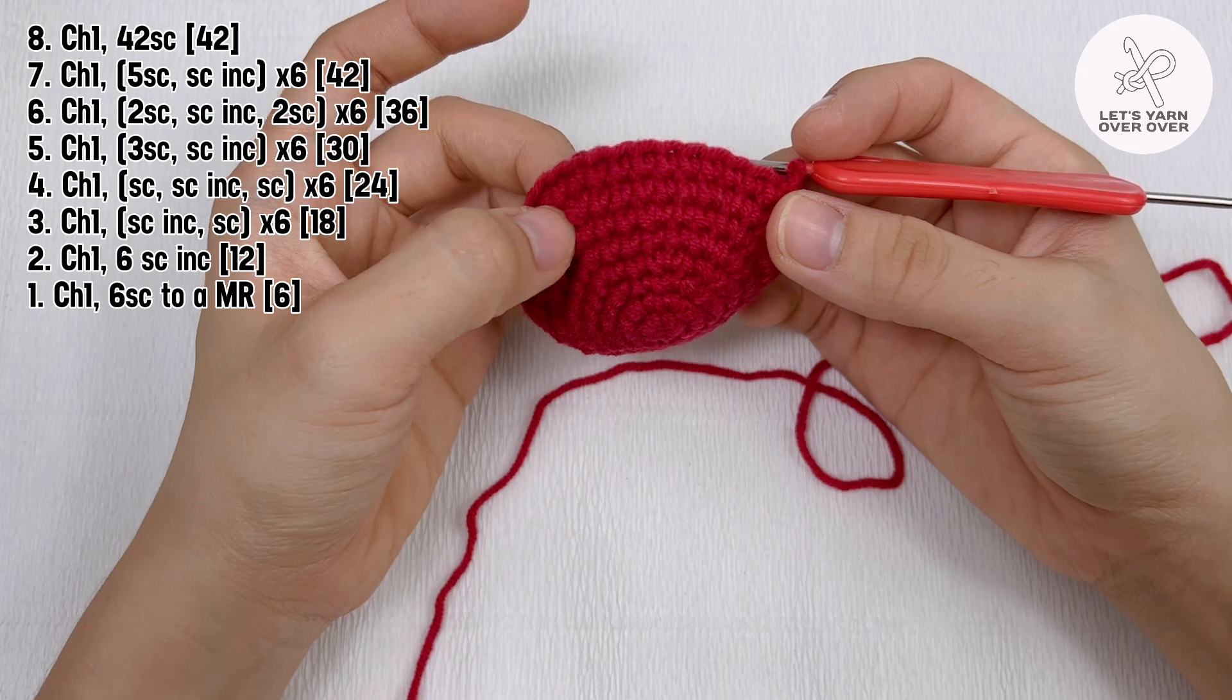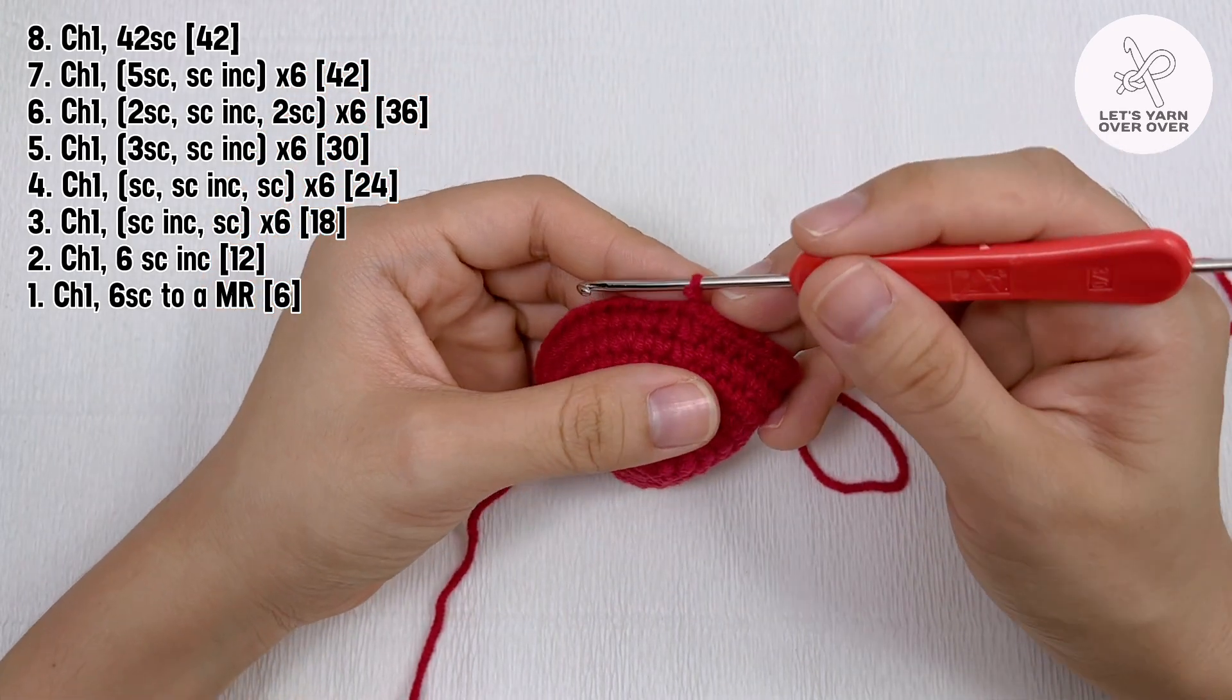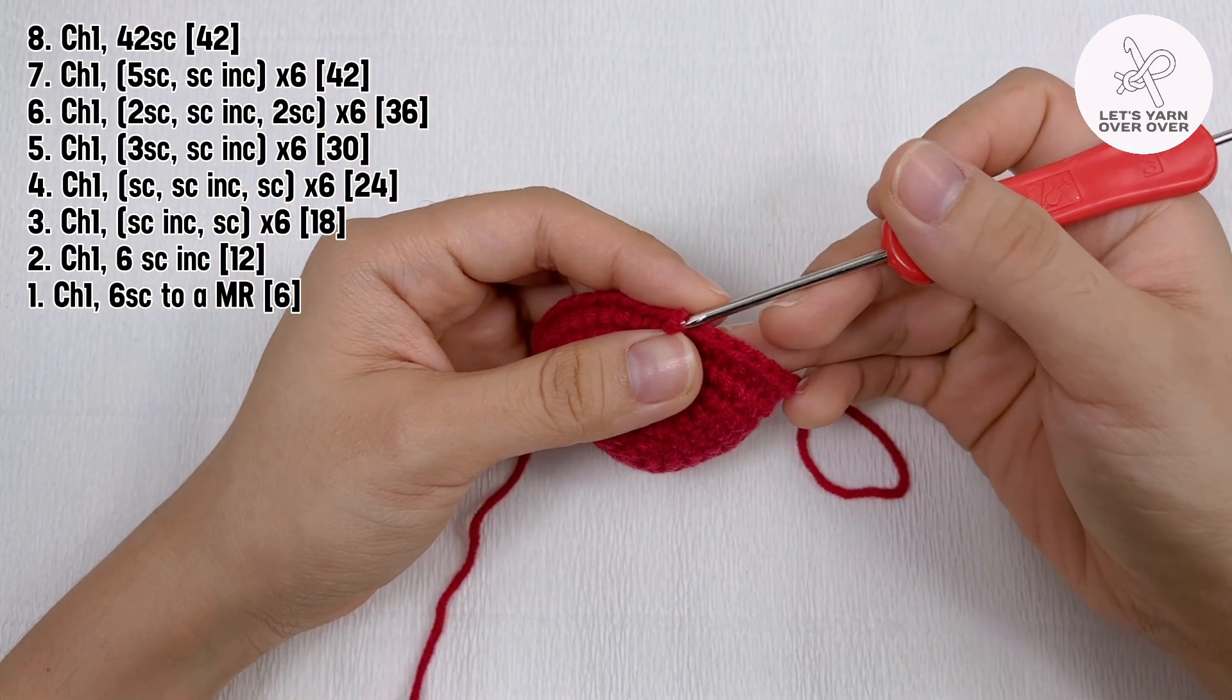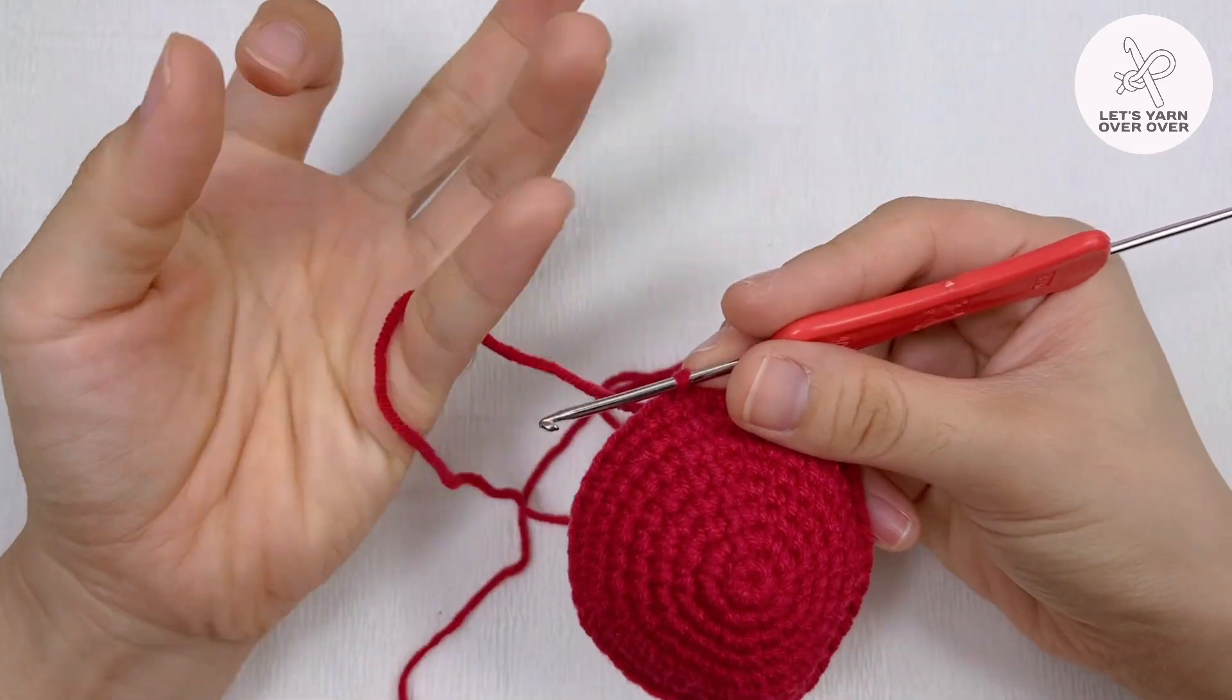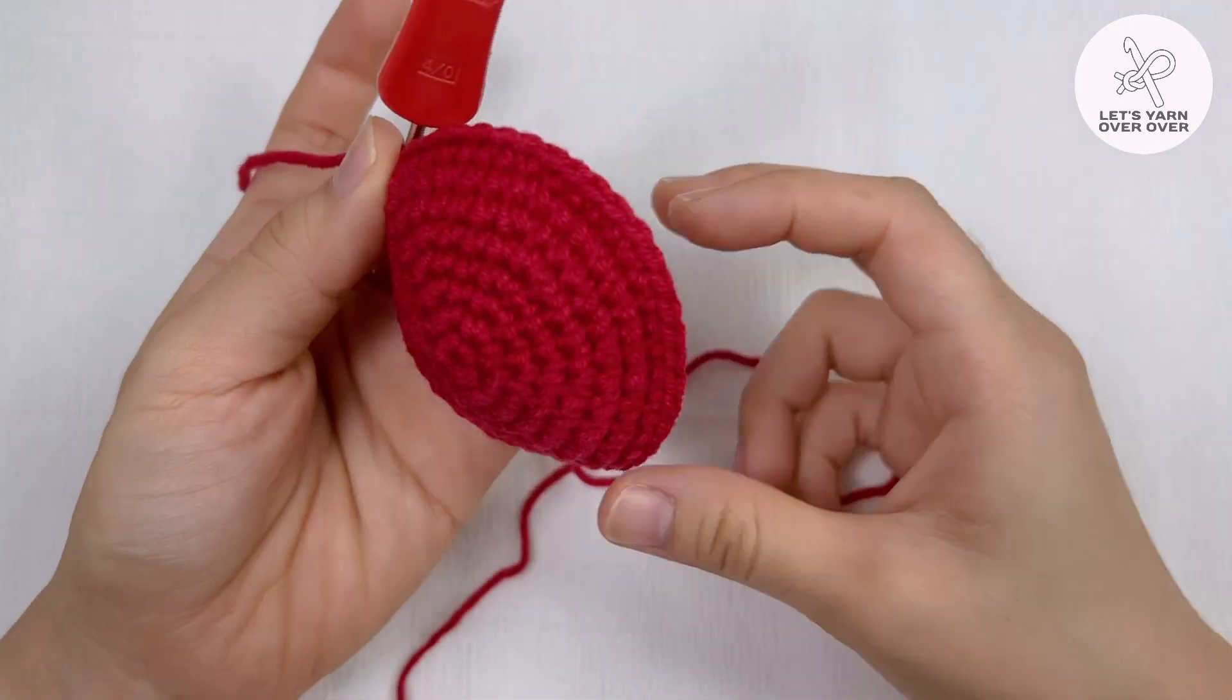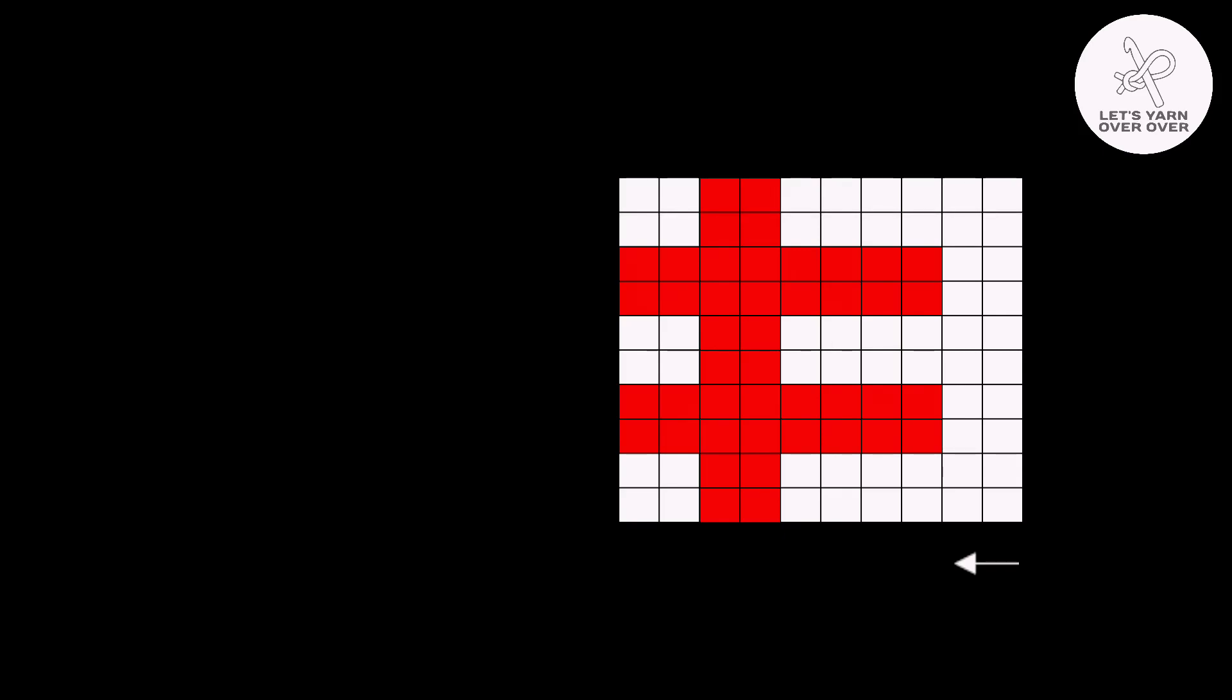Before working on the logo in the next round, referring to the color chart you will see that in the next round we will have to make a few stitches in red before changing to 6 stitches in white, 2 stitches in red, 2 stitches in white, and then a few more stitches in red.